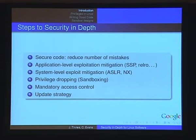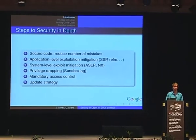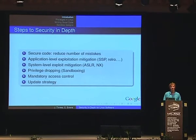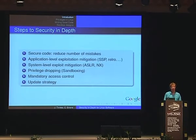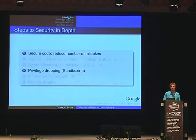There are many steps you can take towards security in depth. The first is having secure code, reducing the number of mistakes you make, and not having vulnerabilities in the first place. The second is application-level exploitation mitigation — you may have heard of SSP stack canaries to prevent stack buffer overflow exploitation, and system-level mitigation techniques such as address space layout randomization and non-executability. You might also know about privilege dropping, which we call sandboxing in this talk, mandatory access control, and security updates. In this talk we will focus on only two steps: secure code and privilege dropping.